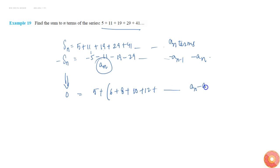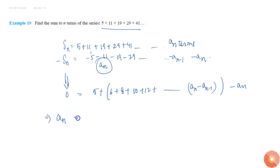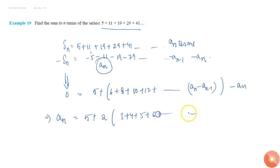If the last term is aₙ, then I'll subtract aₙ₋₁ from aₙ, and minus aₙ will be there as usual. This total is equal to zero, so we get: 5 plus the differences, which come out as 6 plus 8 plus 10 plus 12 plus so on, up to n minus 1 terms.